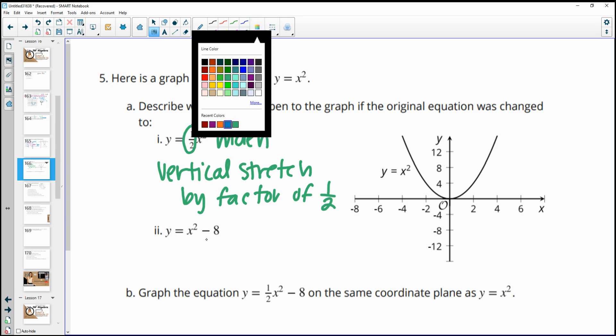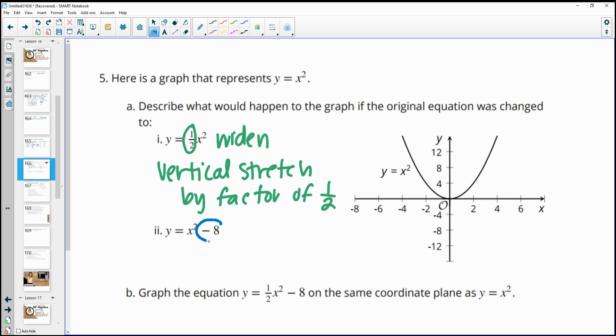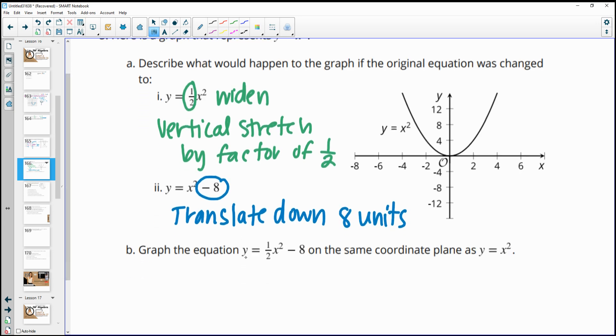Then for this one, if we changed it to x squared minus 8, this minus 8 is going to make it move down. So that's a translation or translate it down 8 units. So if we did both of these at the same time to get this new graph here, right? So we're going to move it down to negative 8 and then it's going to widen out.